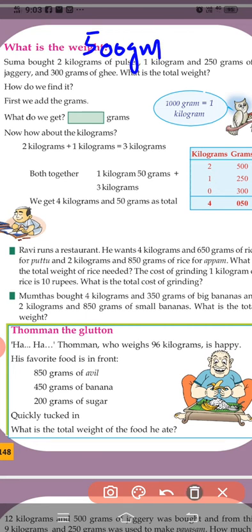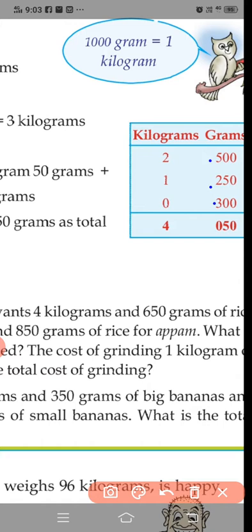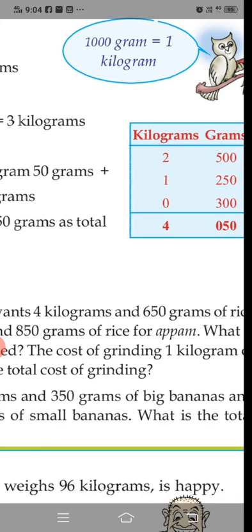Pulses: 2 kilograms and 500 grams. Jaggery: 1 kilogram and 250 grams. Ghee: 300 grams. Then we add the grams: 500 grams plus 250 grams plus 300 grams equals 1,050 grams. Since 1000 grams makes 1 kilogram, we carry 1 kilogram. Then 2 plus 1 is 3, plus 1 is 4. Total: 4 kilograms and 50 grams.